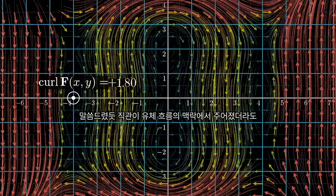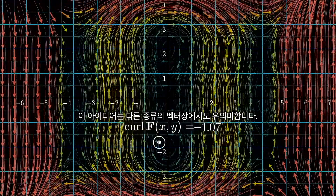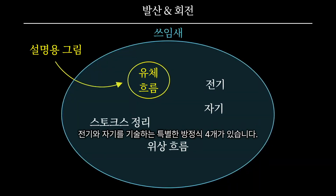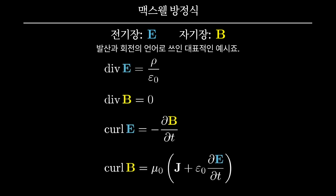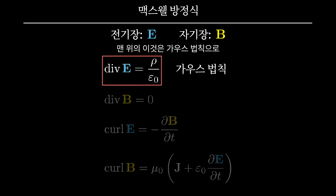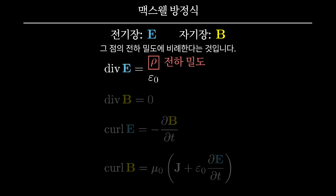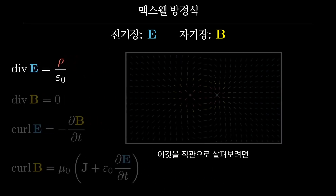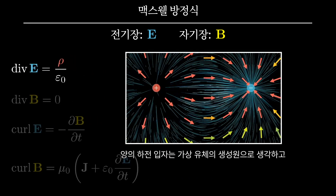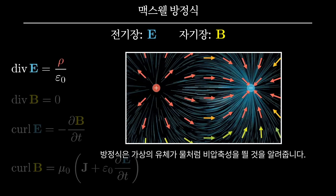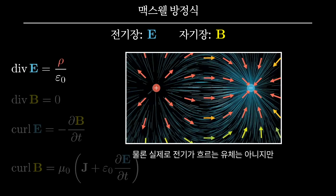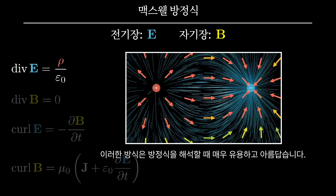Even though these intuitions are given in the context of fluid flow, both divergence and curl are significant for other sorts of vector fields. One very important example is how electricity and magnetism are described by four special equations known as Maxwell's equations, written in the language of divergence and curl. This top one, for example, is Gauss's law, stating that the divergence of an electric field at a given point is proportional to the charge density at that point. You might imagine positively charged regions as acting like sources of some imagined fluid, and negatively charged regions as being the sinks of that fluid. Throughout parts of space where there is no charge, the fluid would be flowing incompressibly, just like water.